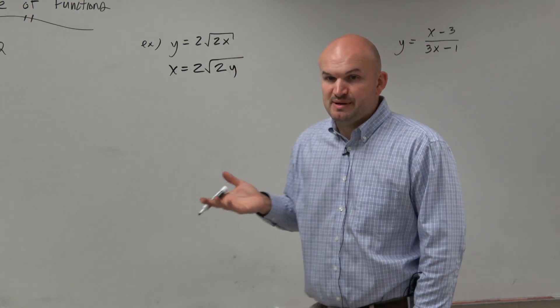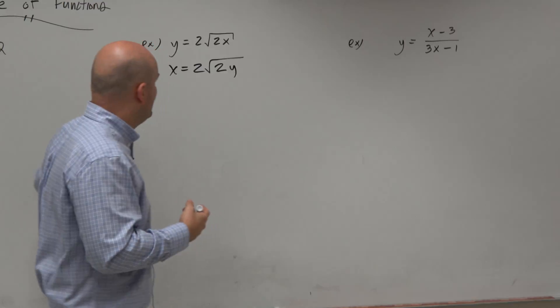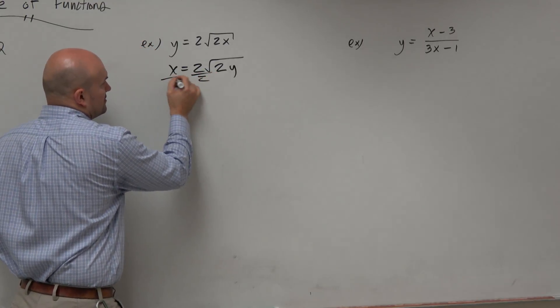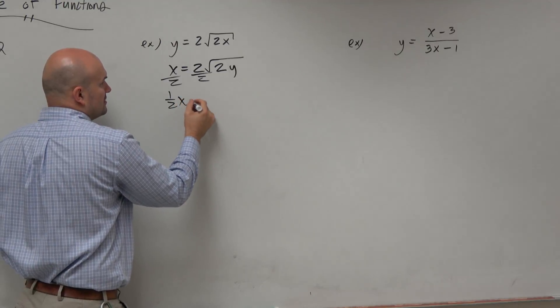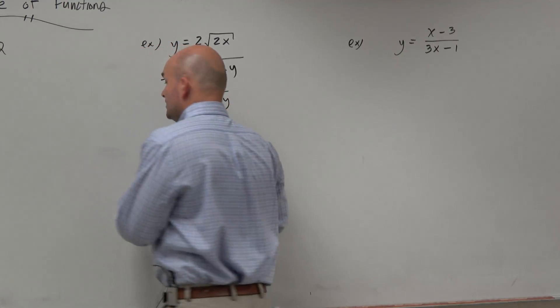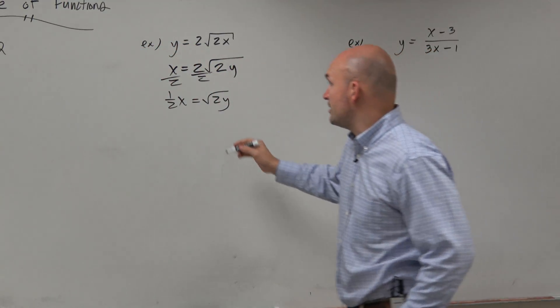So we have y, which means we need to divide by 2 first before you can deal with the radical. So that can be written as 1 half x equals square root of 2y. To get rid of the square root, we need to square both sides.